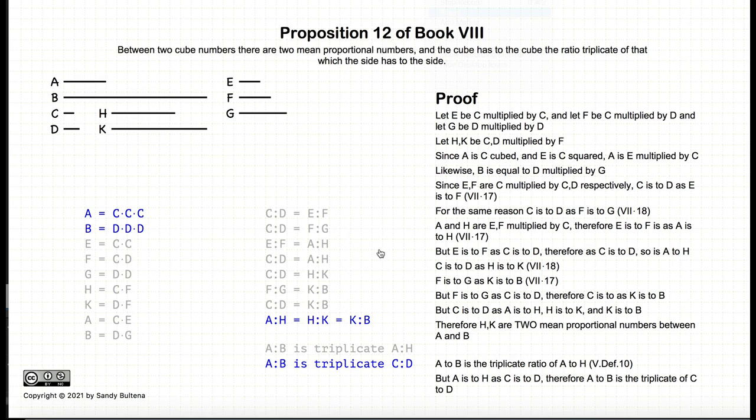And thus we have demonstrated that we had two cubed numbers, a and b. That there were two mean proportional numbers, h and k, such that a is to h as h is to k as k is to b. And that a to b is the triplicate ratio of the sides c and d.